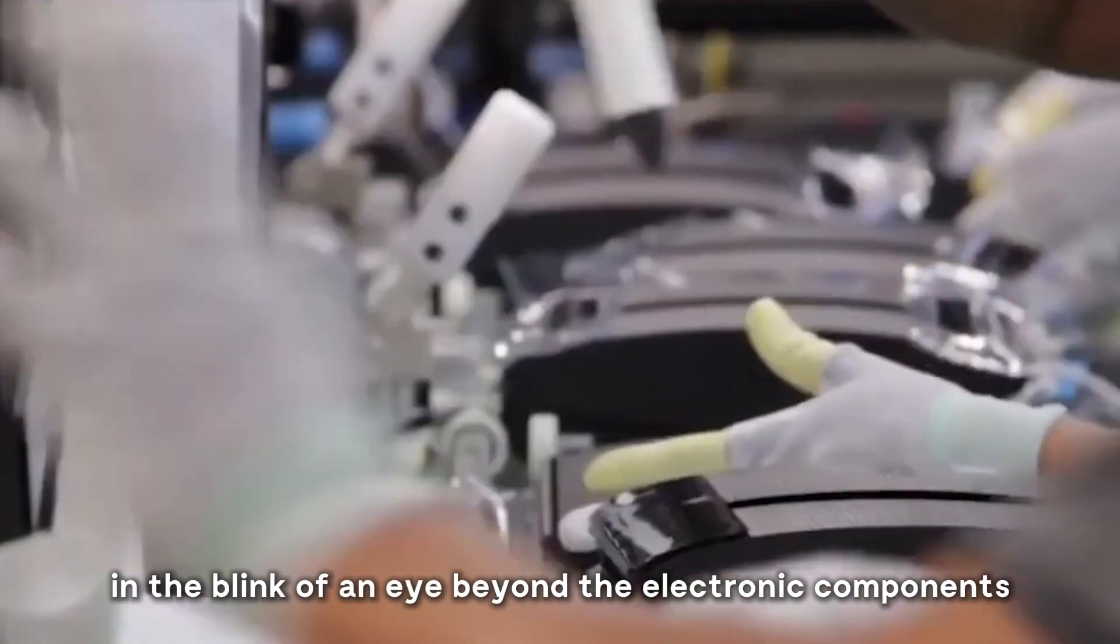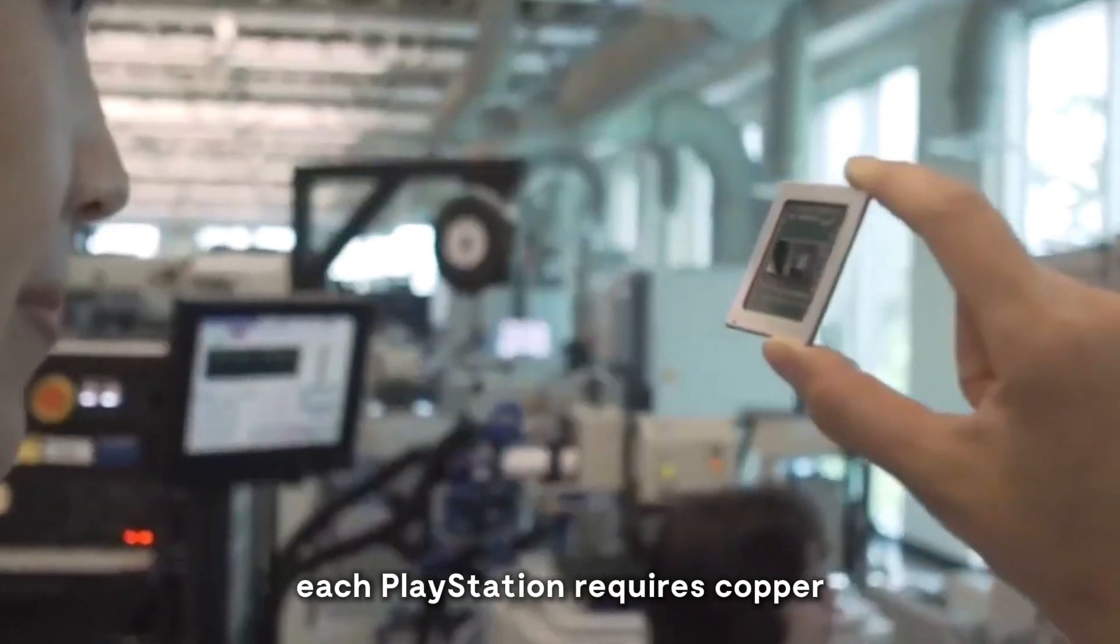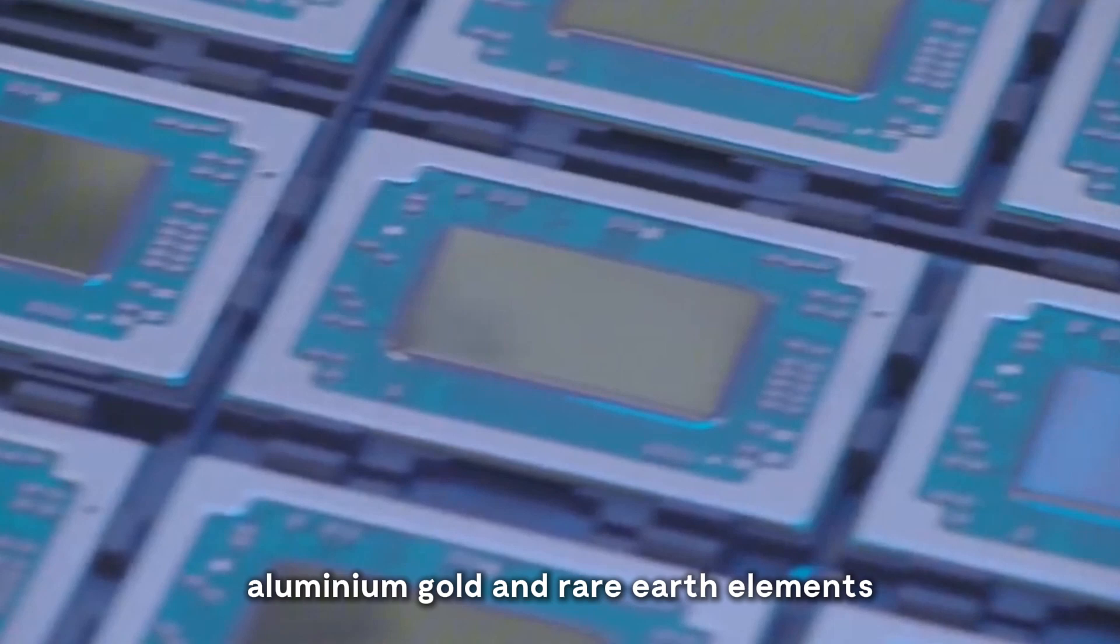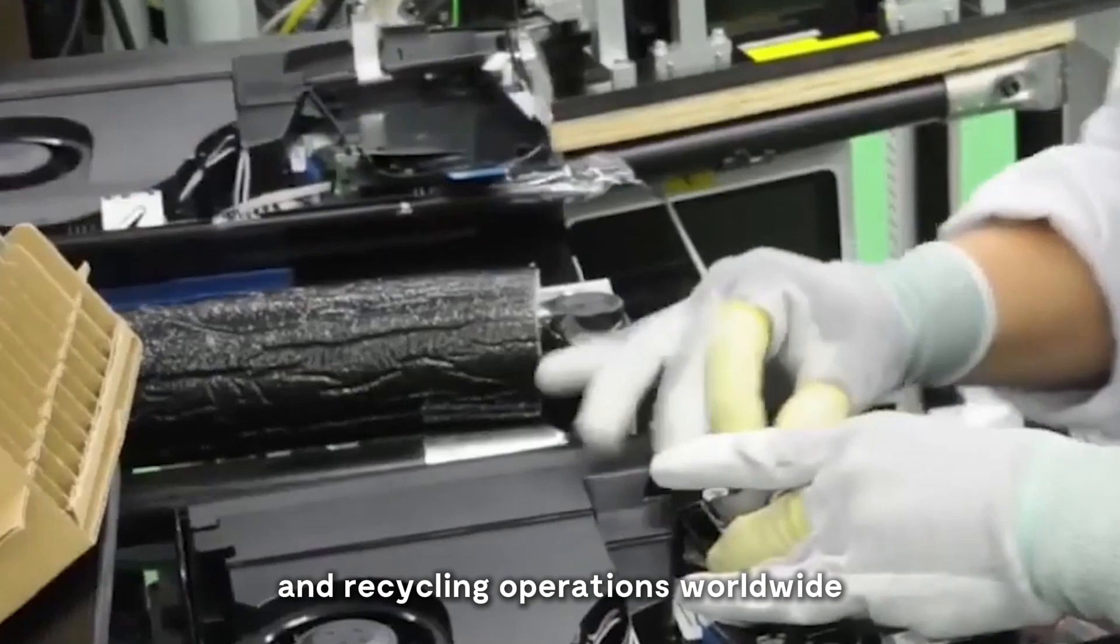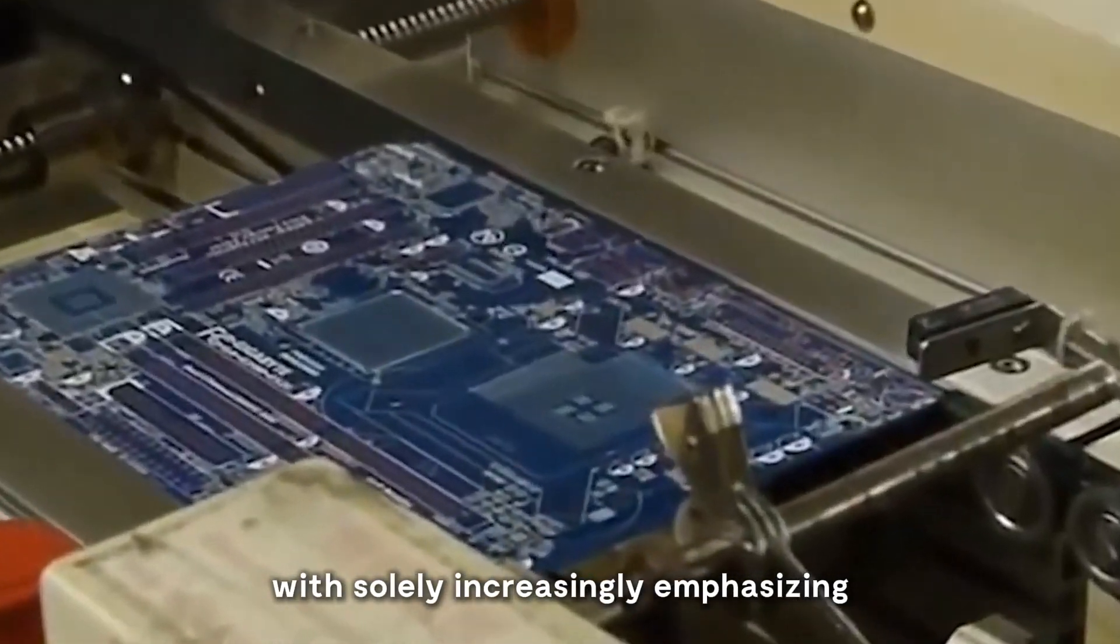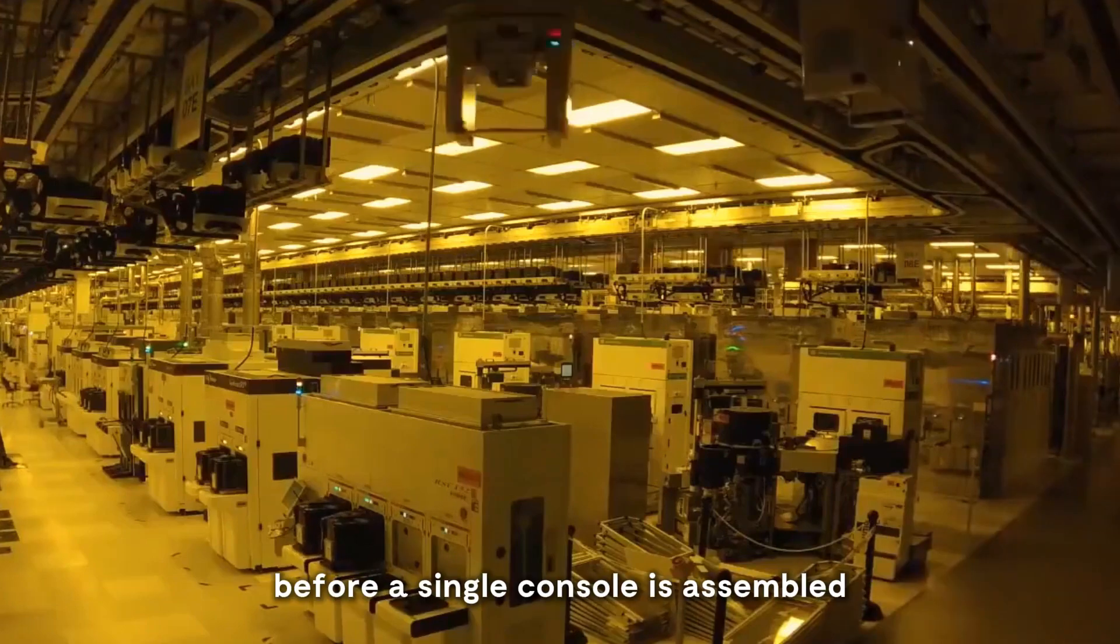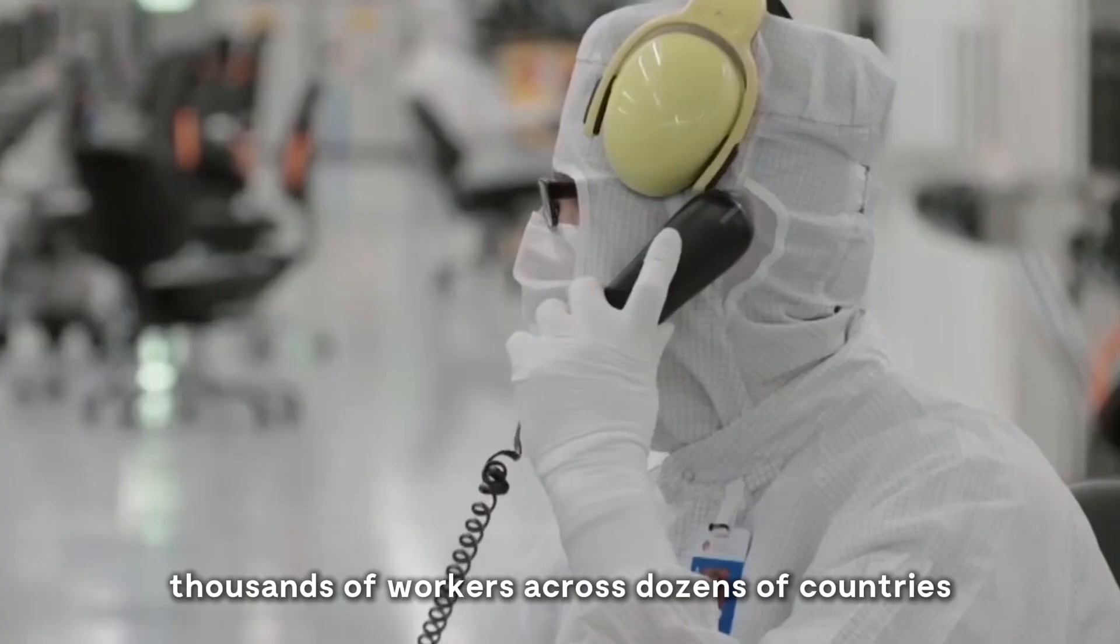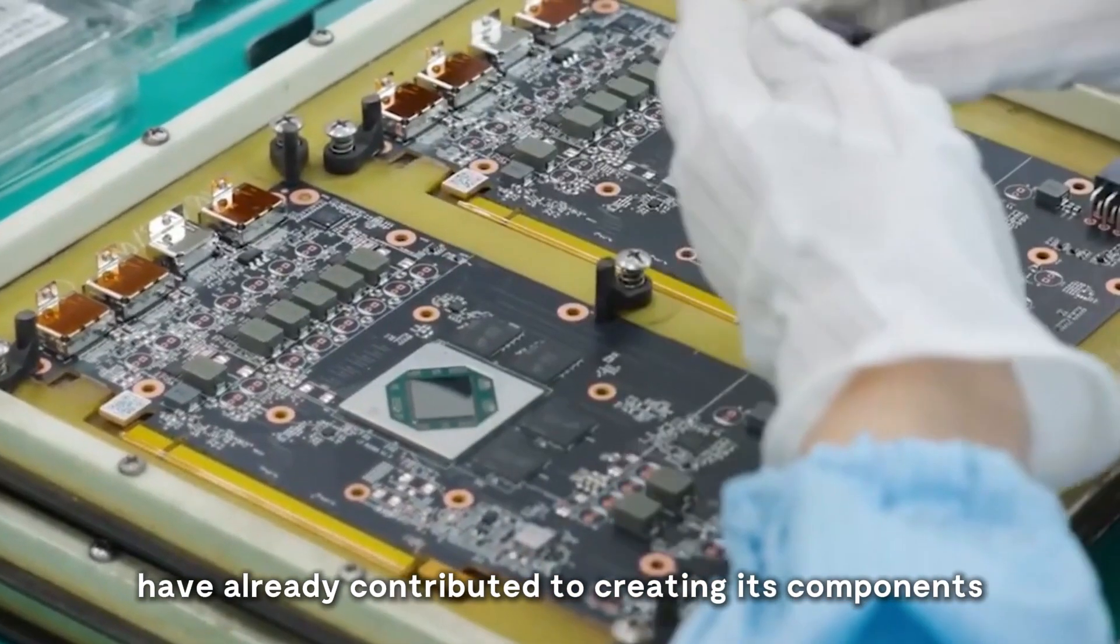Beyond the electronic components, every metal inside your console tells its own story. Each PlayStation requires copper, aluminum, gold, and rare earth elements. These materials are sourced from mines and recycling operations worldwide, with Sony increasingly emphasizing sustainable sourcing practices. Before a single console is assembled, thousands of workers across dozens of countries have already contributed to creating its components.